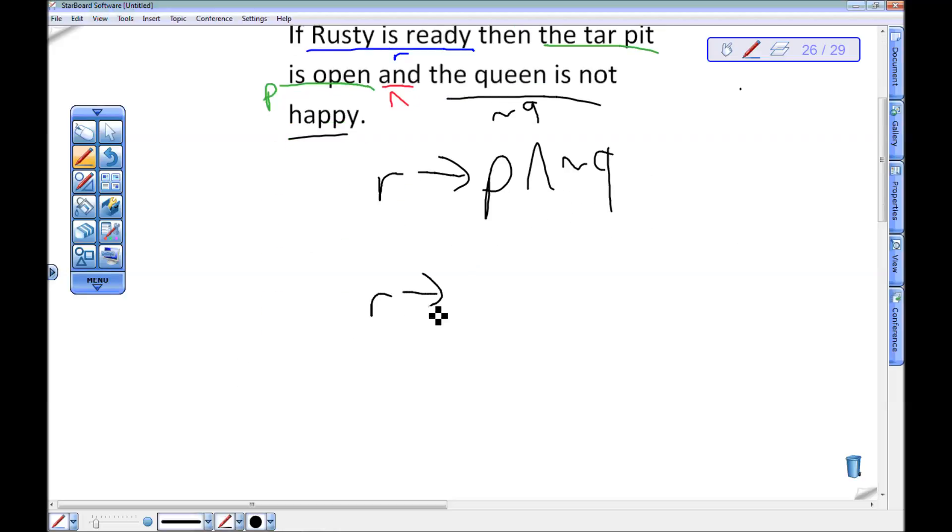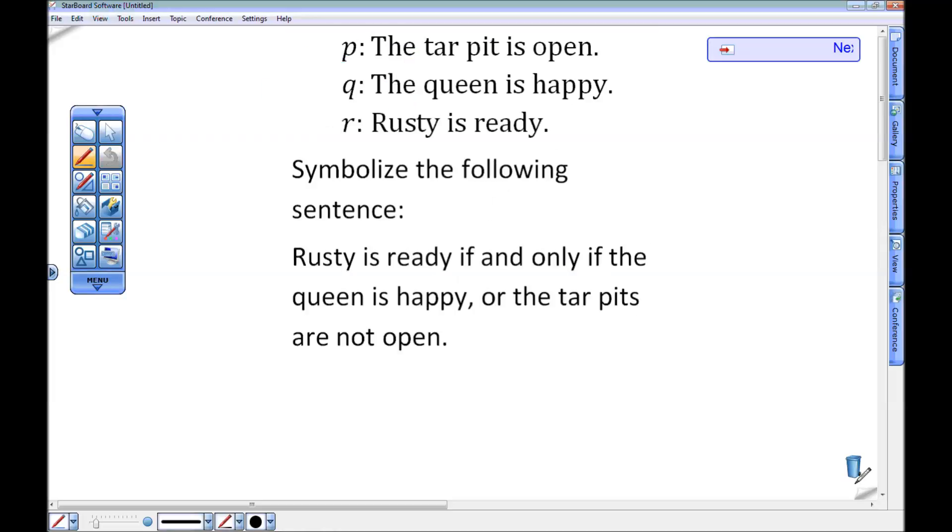If I'm going to do something like make a truth table out of this, which is what we'll cover here soon, it can be helpful just for my understanding and recollection to put parentheses here. Remember, conjunction is stronger than conditional, so this would actually be the same as that, right? Writing if R then P and not Q is the same as writing if R then parentheses P and not Q. Okay, how about the next one?